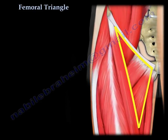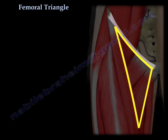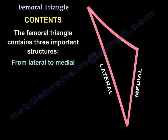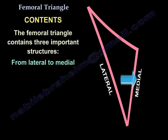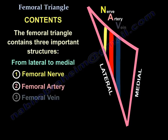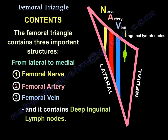The femoral triangle contains three important structures from lateral to medial: the femoral nerve, the femoral artery, and the femoral vein. It also contains the deep inguinal lymph nodes.